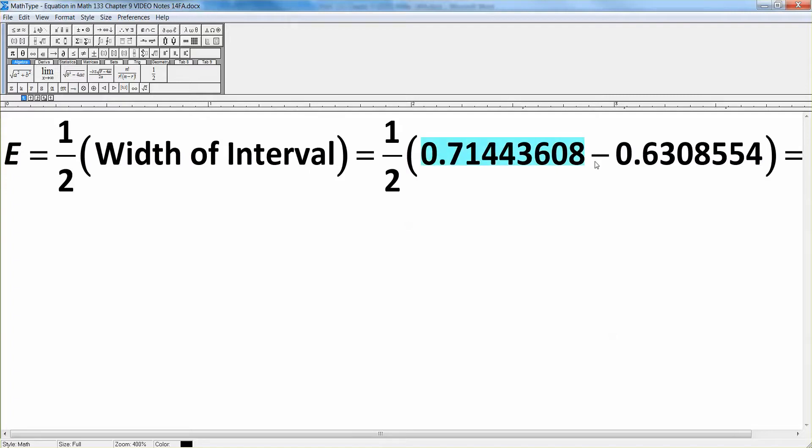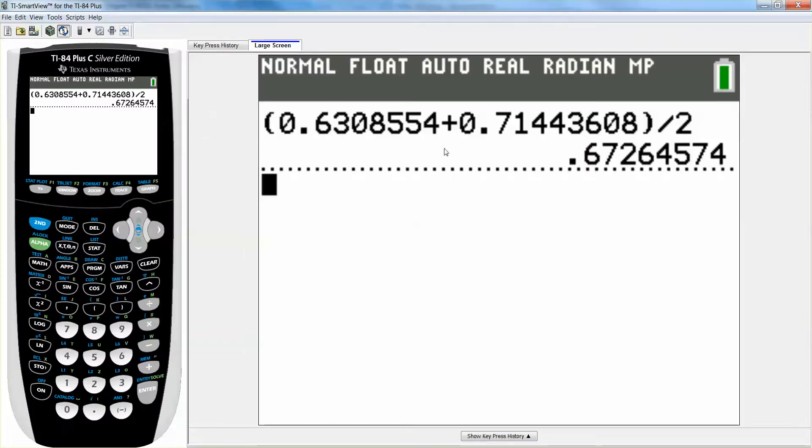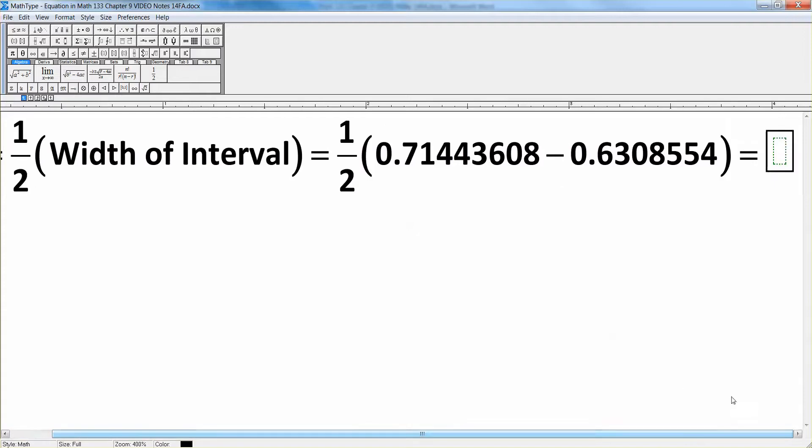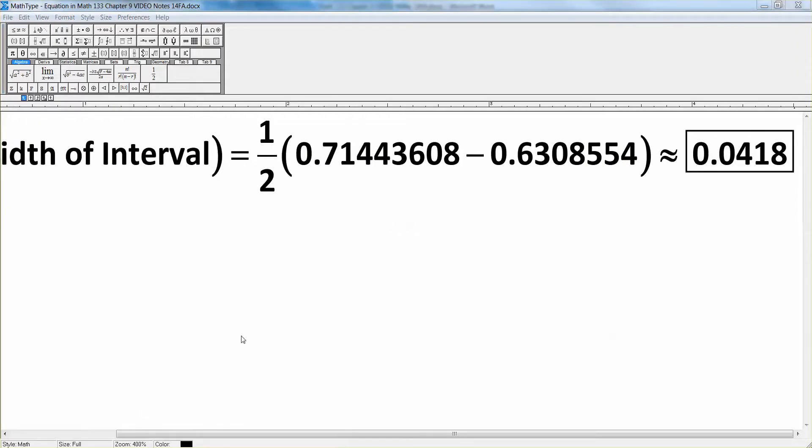To find the width of the interval, you take the higher number, which is 0.71443608, subtract the lower number, which is 0.6308554, and then divide by 2. Remember to find the center, we added them up and divide by 2. So now I do the difference: 0.71443608 minus 0.6308554, subtract them, divide by 2, and I'll get 0.04179. So about 0.0418.